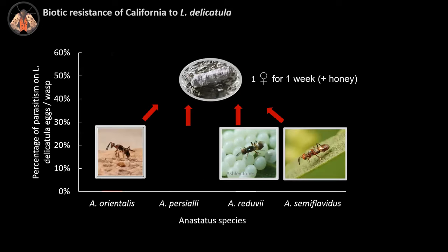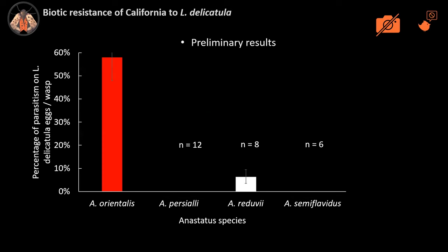We followed the same methodology used for Anastatus orientalis, exposing egg masses to the three different native parasitoid species using one female for one week. We obtained not very promising results — on the left in red is the control percentage of parasitism on spotted lanternfly by Anastatus orientalis, and we can see that only Anastatus reduvii was able to parasitize spotted lanternfly egg masses, but at very low levels.